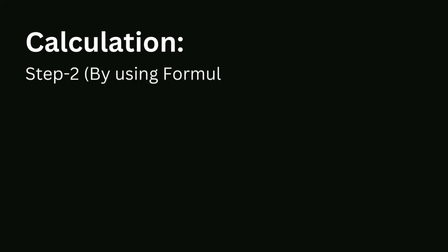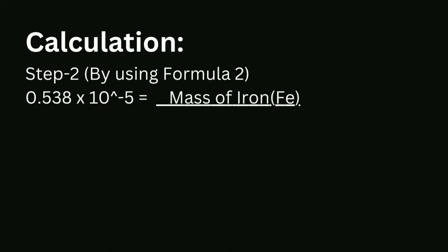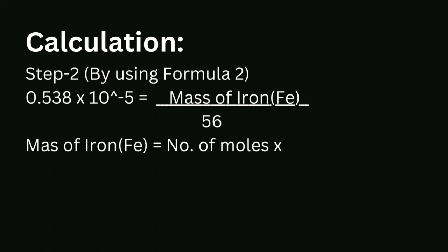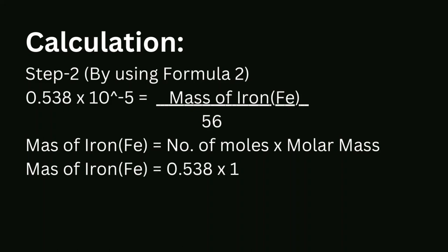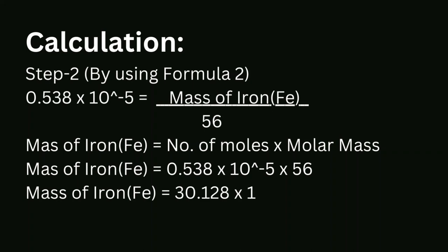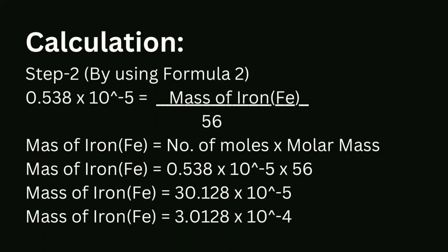Step 2: solve using the first formula. In this step we calculate the mass of iron atoms in 3.24 × 10¹⁸ atoms of iron. Mass of iron = number of moles × molar mass = 0.538 × 10⁻⁵ × 56 = 3.0128 × 10⁻⁵.